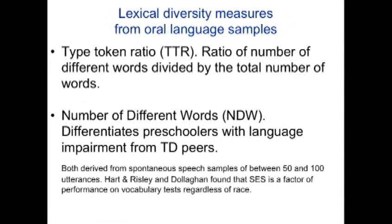Type-token ratio and number of different words are both derived from speech samples — between 50 and 100 utterances, as we know from the Hart and Risley study and the Penny and Quinn study. Children's exposure to vocabulary words differentiates based on socioeconomic status. So again, number of different words and type-token ratios reflect socioeconomic status; we can't pull that apart from a disorder.